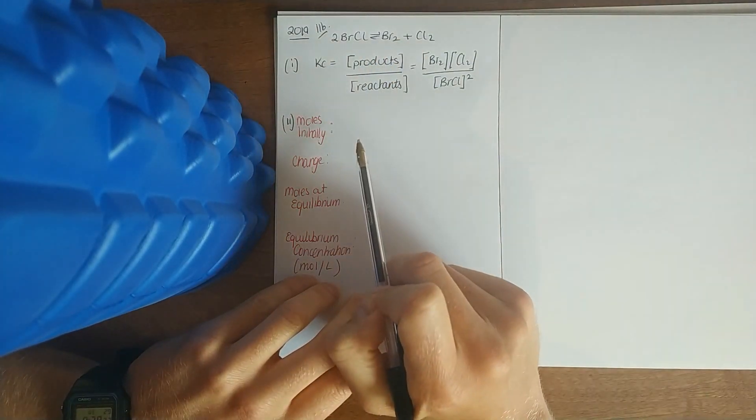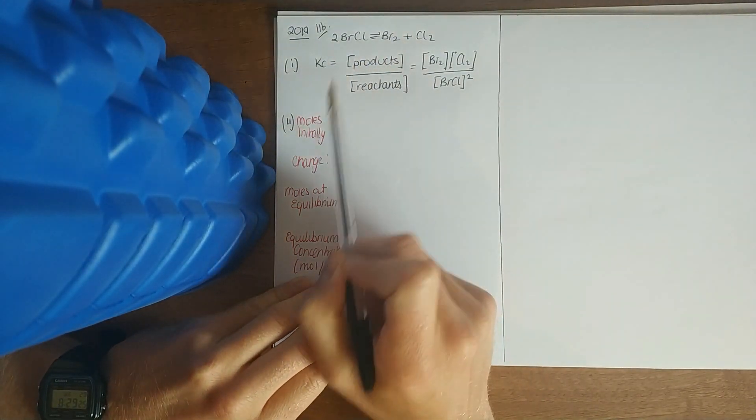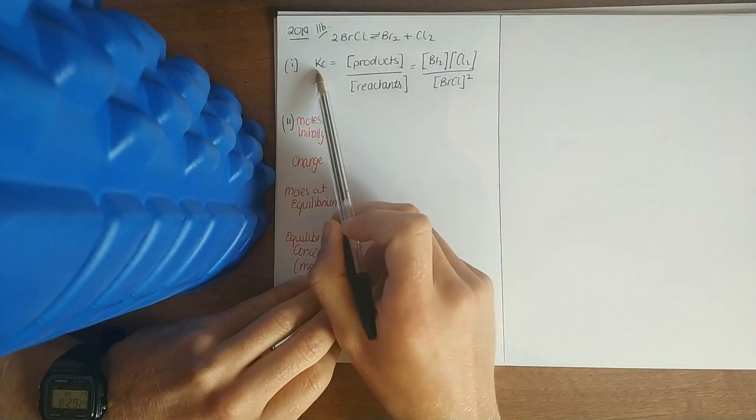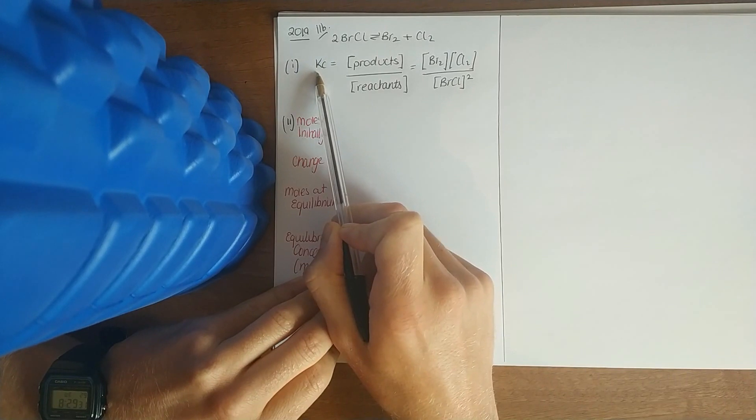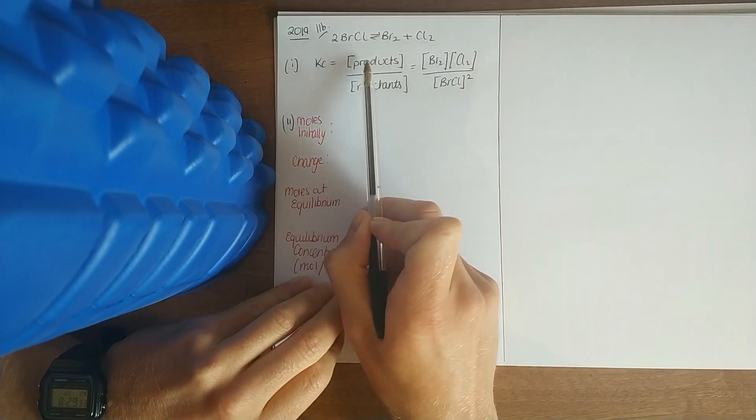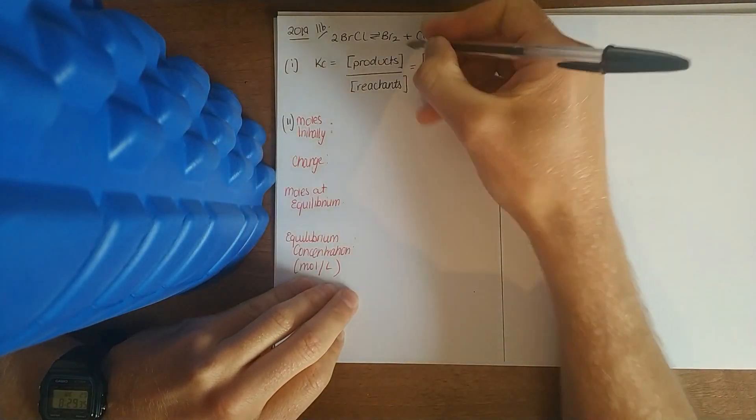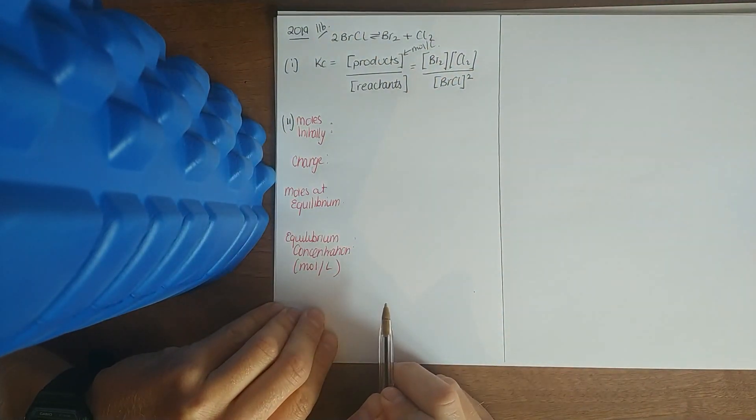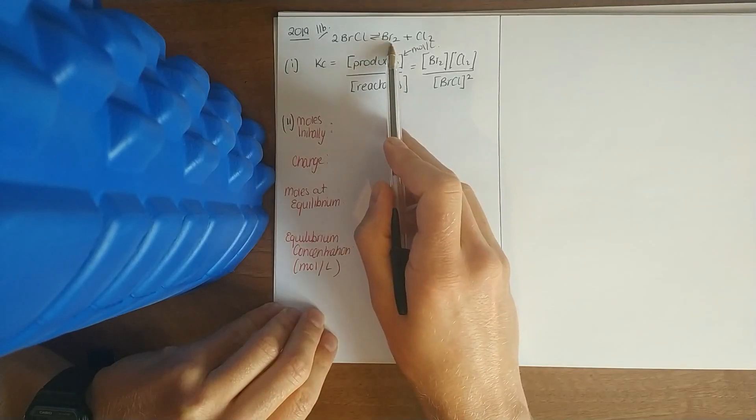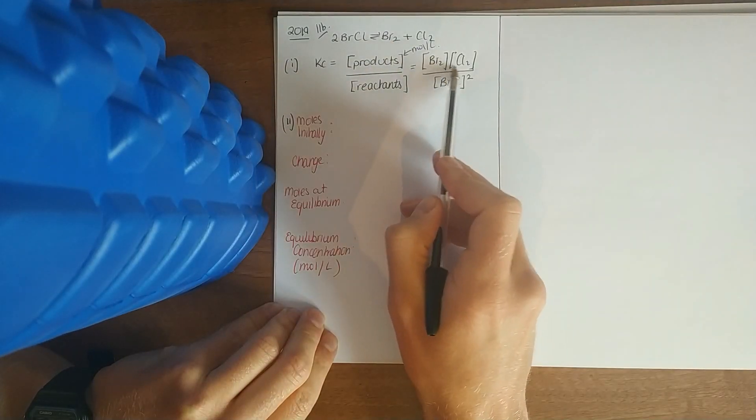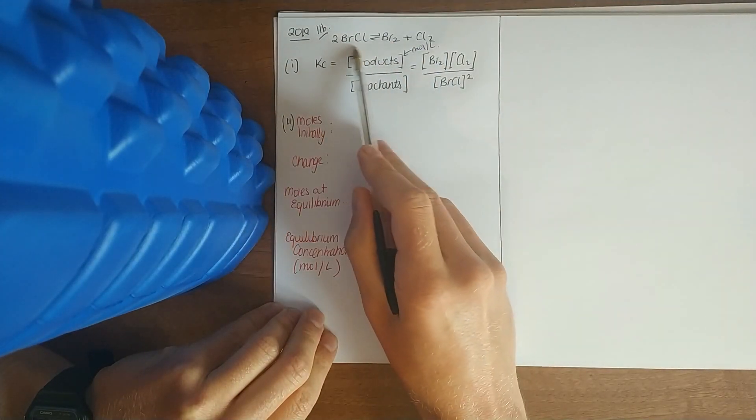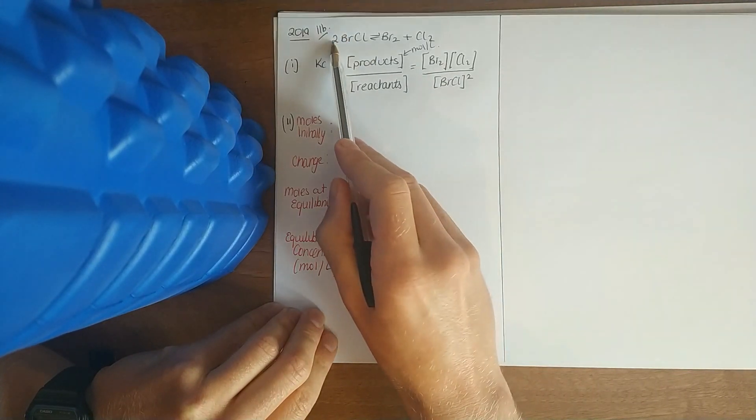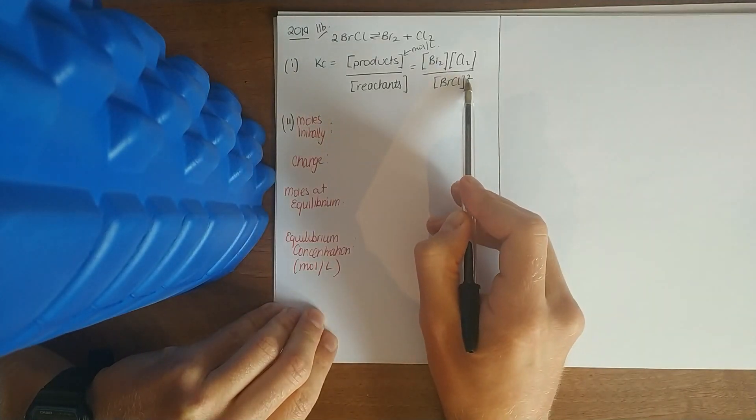They give us this equation. First thing they ask for is the equilibrium constant KC. They'll always give you a temperature because that's the only thing that affects it. You put the products over the reactants. These square brackets just mean concentration of moles per liter. So products Br2 times Cl2 over the reactant bromine chloride, and any numbers in front come up as powers.